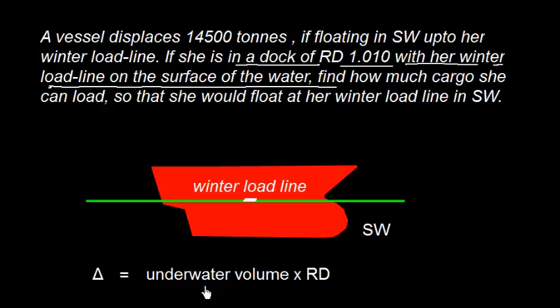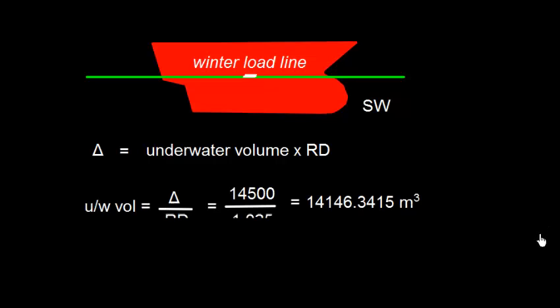So first we need to find the underwater volume. Well that can be calculated like this: underwater volume is displacement divided by RD, and displacement is given which is 14500 and RD is 1.025. We'll take up to 3 places, 14146.3415 cubic meters.